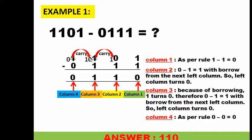Because of borrowing from the second column, the third column at the top had 1, which turns to 0. Therefore 0 minus 1 gives 1 with a borrow from the left column again, so the fourth column turns to 0. And the last column, column 4: 0 minus 0 is 0. So my answer is 0110.